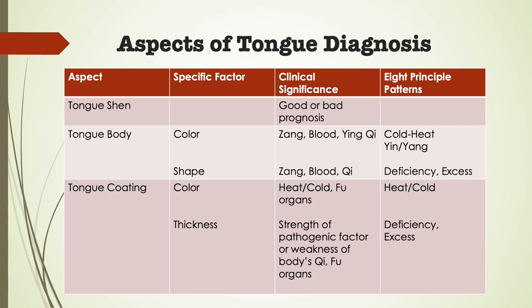The shape of the tongue includes the tongue size, physical shape, whether there are cracks on the surface, and the length and mobility of the tongue. The tongue shape will mainly reflect whether there is a deficiency or excess condition. It will give an impression of the condition of qi and blood, as well as whether wind and dampness are present. The shape of the tongue will also reflect the severity and duration of the imbalance.